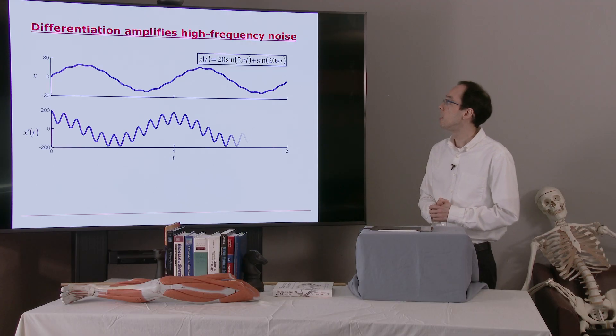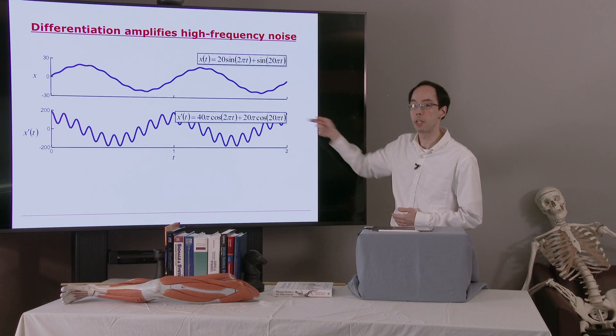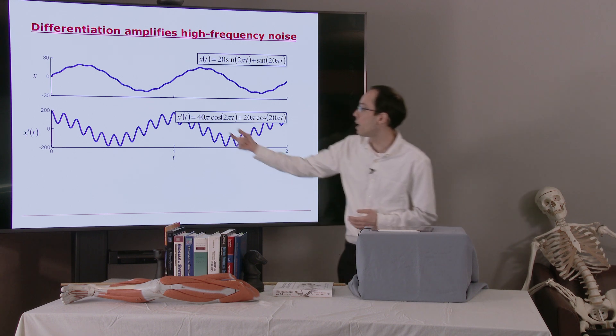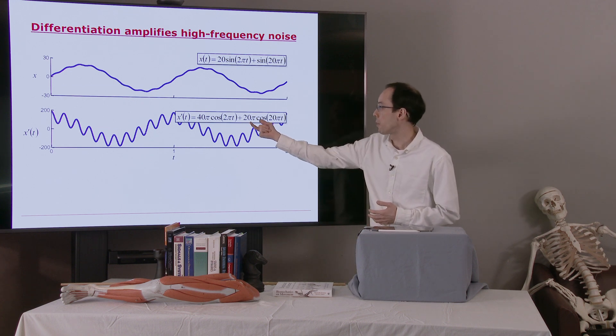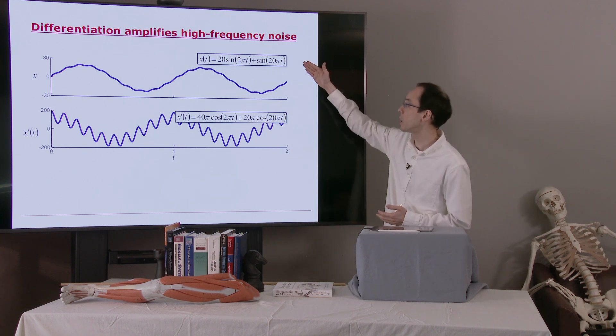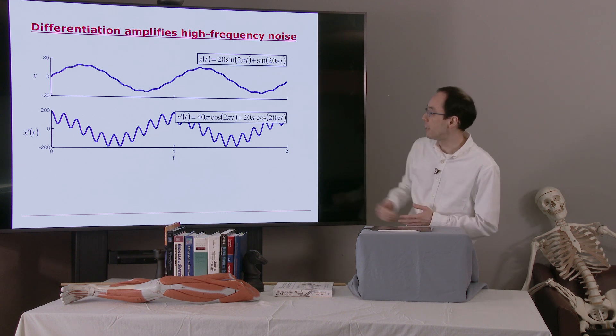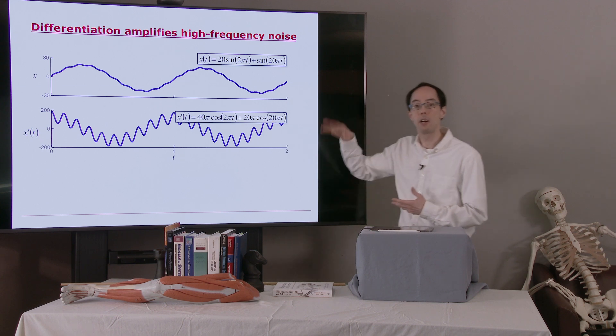What happens if we differentiate? Well, you can differentiate this symbolic expression and end up with this one here. We find that we now have a signal part with an amplitude of 40 and a noise part with an amplitude of 20. So our signal to noise ratio has gone from 20 down to 2. And you can see that in the trace here. The squiggles in the blue line are now more pronounced.